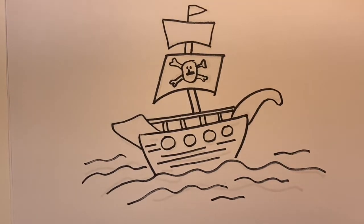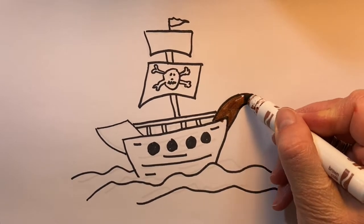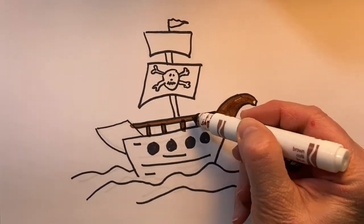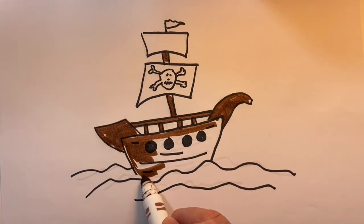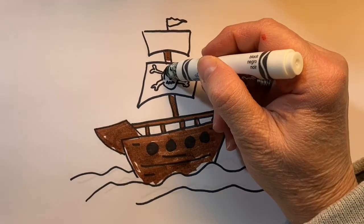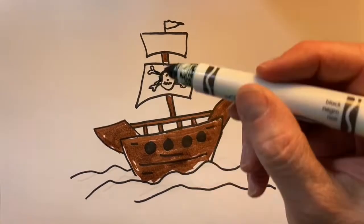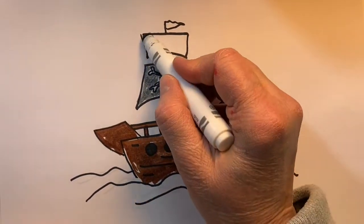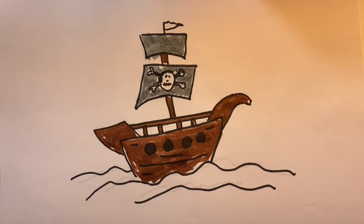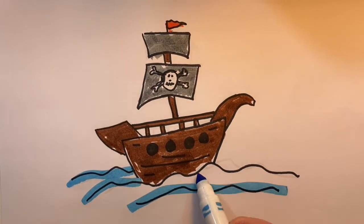And now we'll add some color. The ship. Did you know that grog was the favorite drink of pirates, made of rum, lemon juice, water, and sugar?